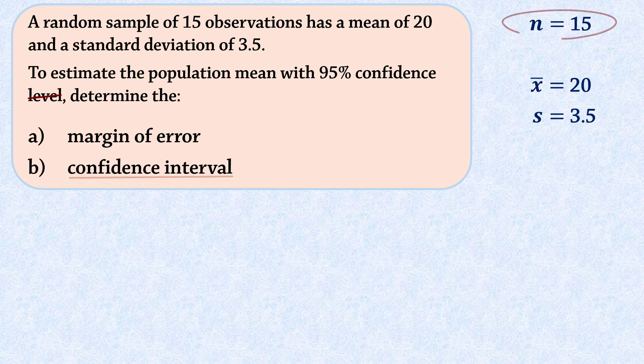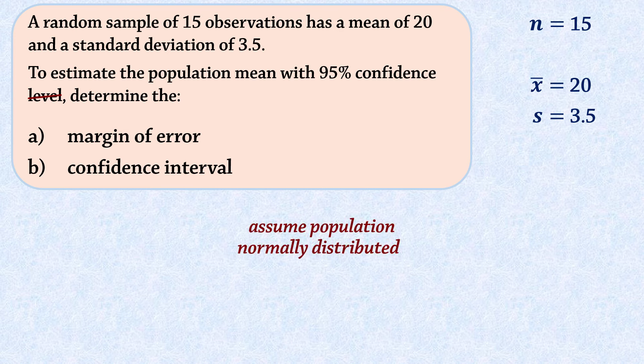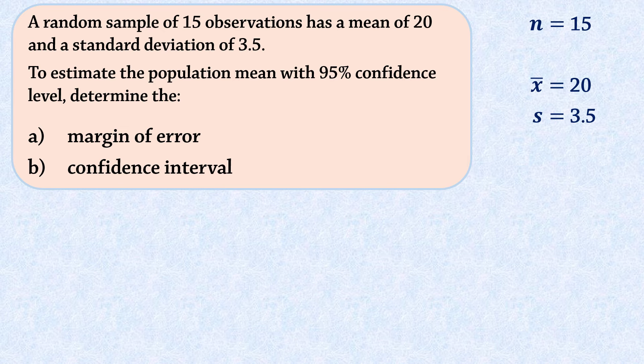The sample size 15 here is considered small because it is less than 30. Sample sizes that are at least 30 are generally considered large enough for the central limit theorem to apply. Therefore, we have to assume that the population is normally distributed in order to safely proceed with our calculations. If the sample size is large, that is, at least 30, this assumption is not necessary due to the central limit theorem.